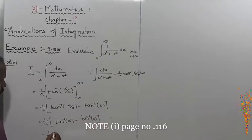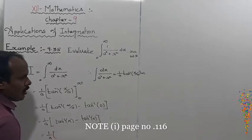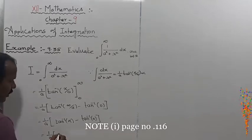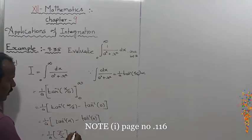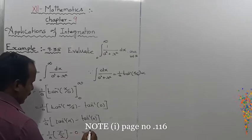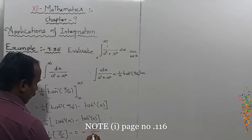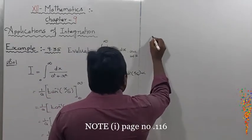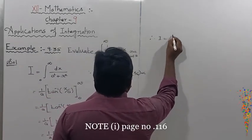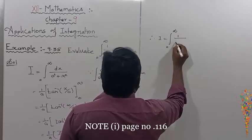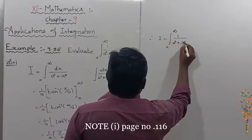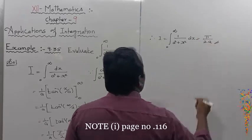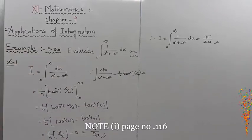Tan inverse of infinity is equal to pi by 2, that is 90 degrees. So this becomes pi by 2 minus 0, which equals pi divided by 2a. Therefore, I — the integral from 0 to infinity of 1 divided by (a squared plus x squared) dx — equals pi divided by 2a. That is the solution of Example 9.35.